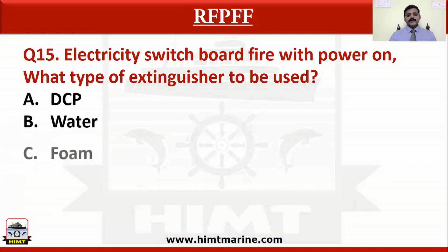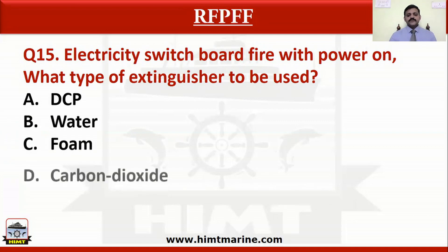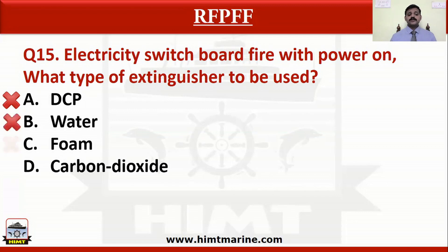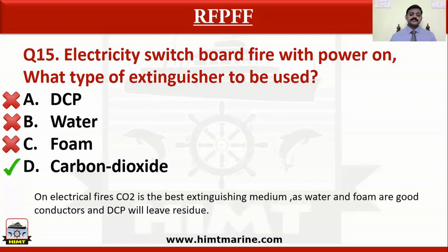Electricity switchboard fire with power on — what type of extinguisher to be used? Option A DCP, option B water, option C foam, option D carbon dioxide. Water and foam cannot be used as they are conductors of electricity. DCP is also not correct because it will leave residues. The correct answer is carbon dioxide.